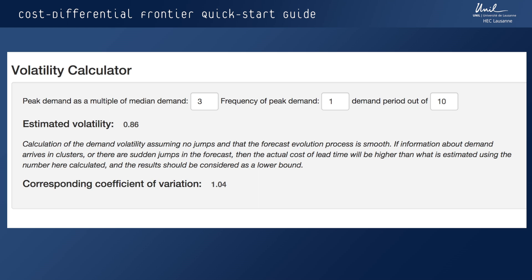In other words, if median demand is 100 units, then a demand peak would be 300 units. Then we're going to ask the question: how often does this kind of peak occur? Let's suppose that we could expect this kind of demand peak one demand period out of 10. We put this into the calculator, and it is going to estimate that our demand volatility would be 86%. Note that this corresponds to the full lead time.